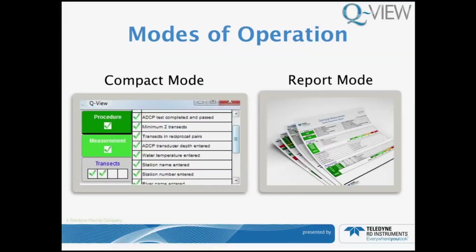There are two modes of operation. The compact mode is designed for when you're collecting data — it sits in the lower right hand corner of your screen. When you're collecting data, you can still follow along during your transects, make sure that you're collecting good data and that the bins are all there and the ADCP is sending data back. Back in the office, you can run this in a full report mode where this information and the quality assurance and quality control checks are provided in full detail.